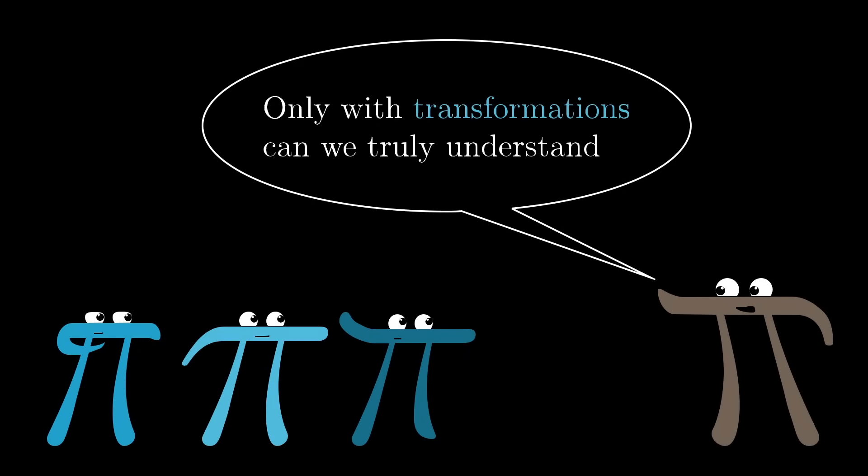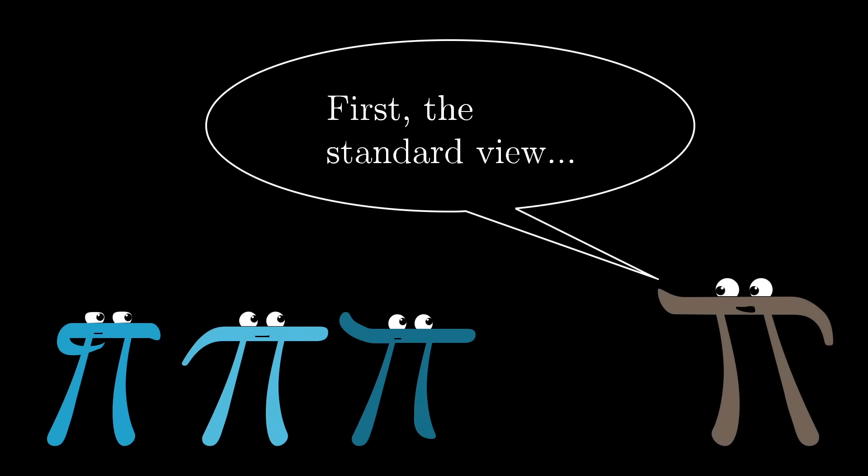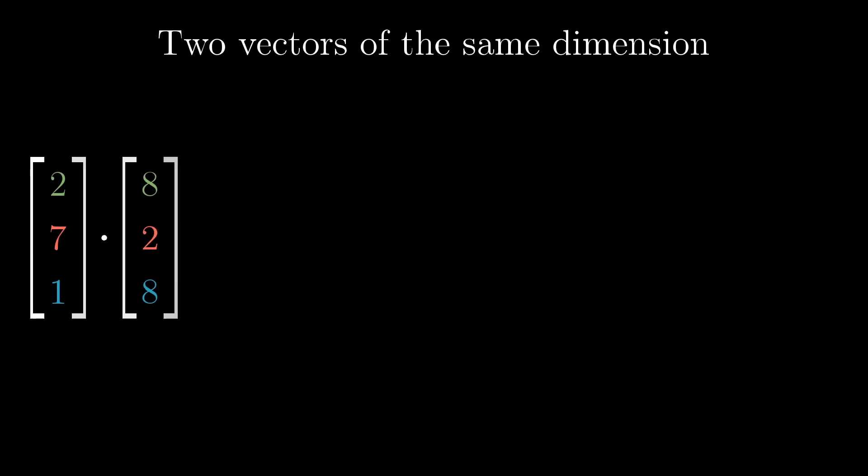Before that, though, let me just briefly cover the standard way that dot products are introduced, which I'm assuming is at least partially review for a number of viewers. Numerically, if you have two vectors of the same dimension, two lists of numbers with the same lengths, taking their dot product means pairing up all of the coordinates, multiplying those pairs together, and adding the result.